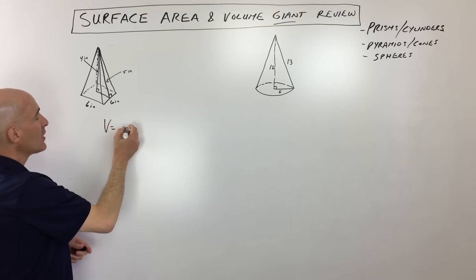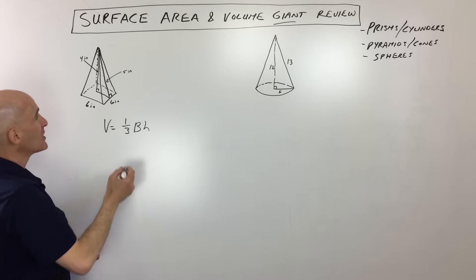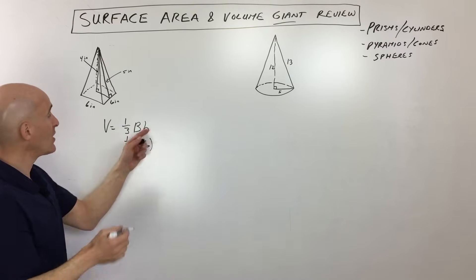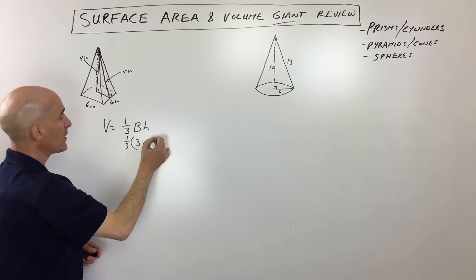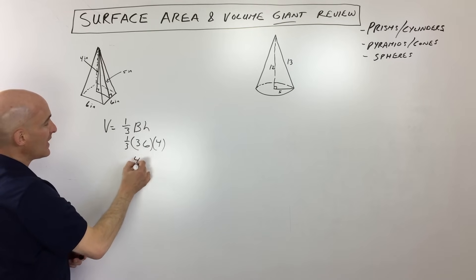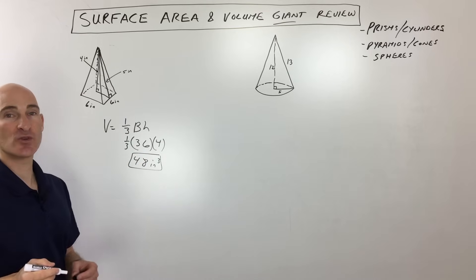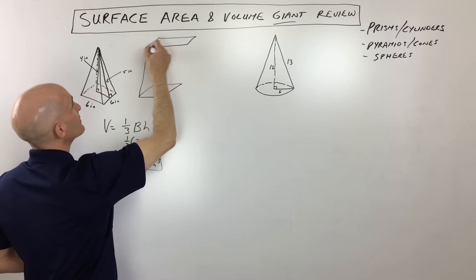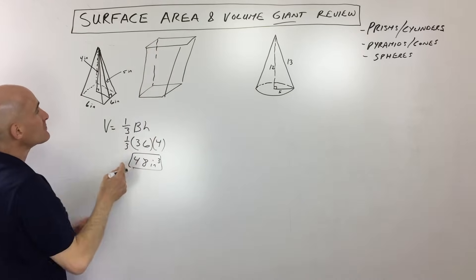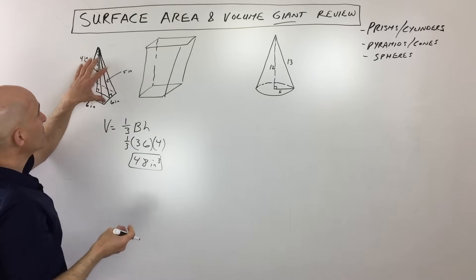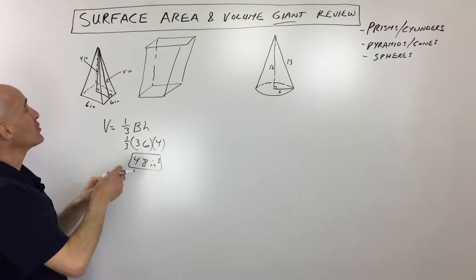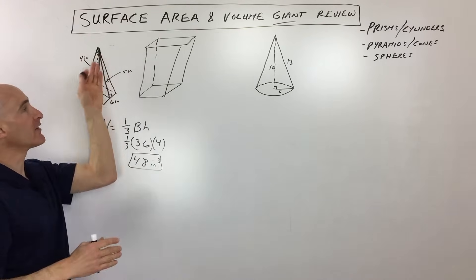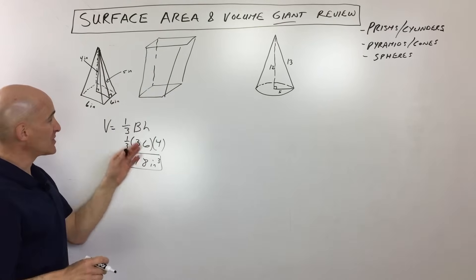The volume formula for pyramids and cones is one-third times the area of the base times the height. For a square pyramid with base 6×6 = 36 and height 4: 36 × ⅓ × 4 = 48 inches cubed. The reason for that one-third: if you put a pyramid inside a prism with the same base and height, you can actually fit three pyramids inside — the pyramid only takes up a third of the prism's volume.